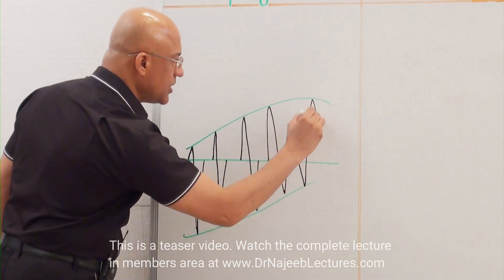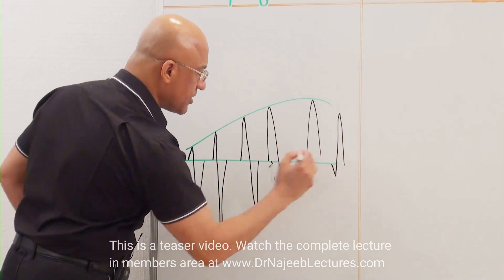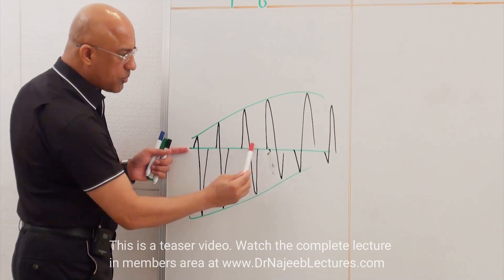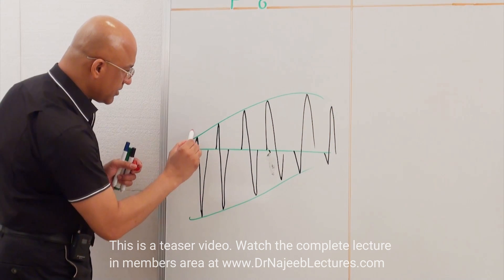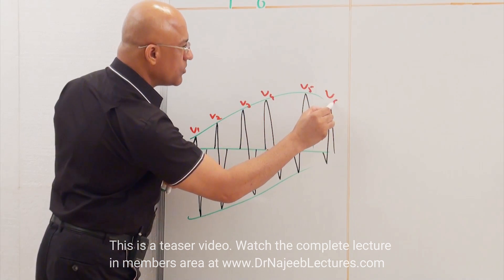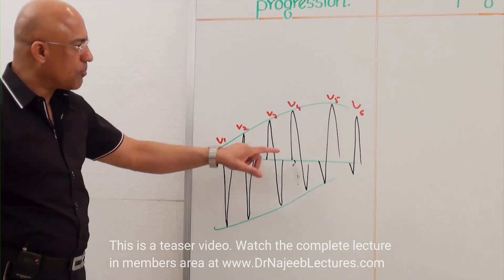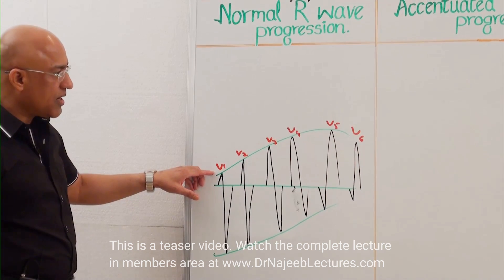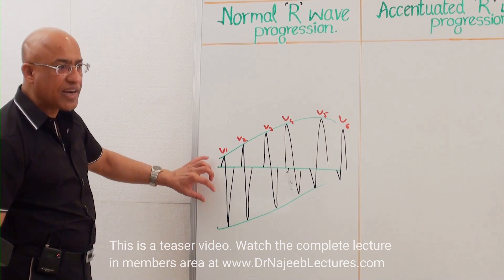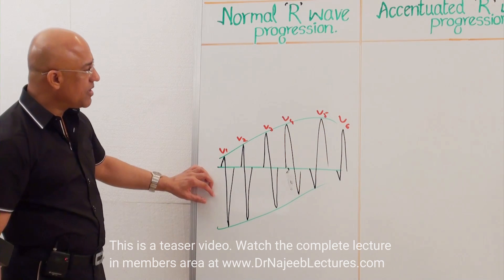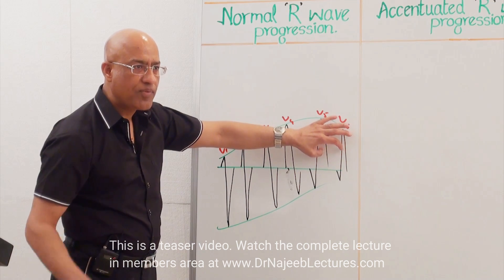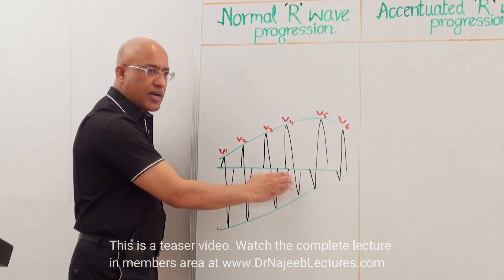Here is V5 and here is V6. If you look at the pattern of QRS complex from V1 up to V5 — V1, V2, V3, V4, V5, and V6 — you see that dominantly QRS complexes are negative in right-sided chest leads, and QRS complexes are dominantly positive deflections in left-sided chest leads. And in between, they are showing biphasic deflections.